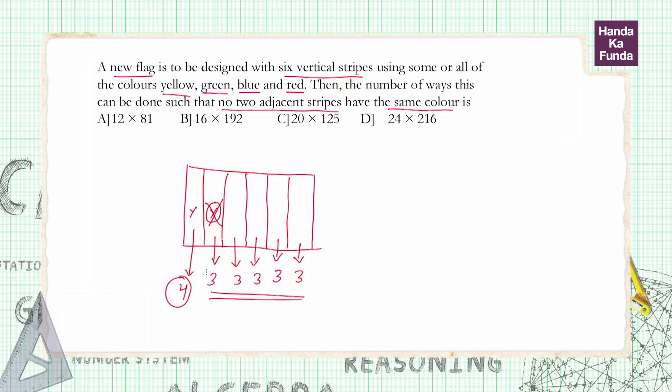So what does that mean? What is my total number of choices? That is 4 × 3^5. But I don't have anything like that in the options, because this is effectively 4 × 243.